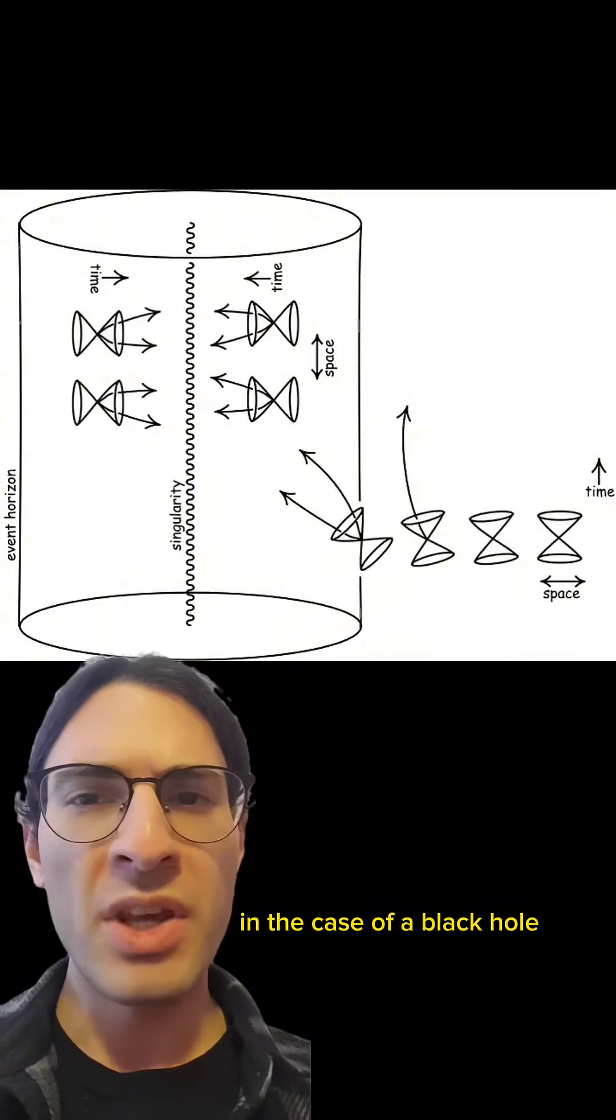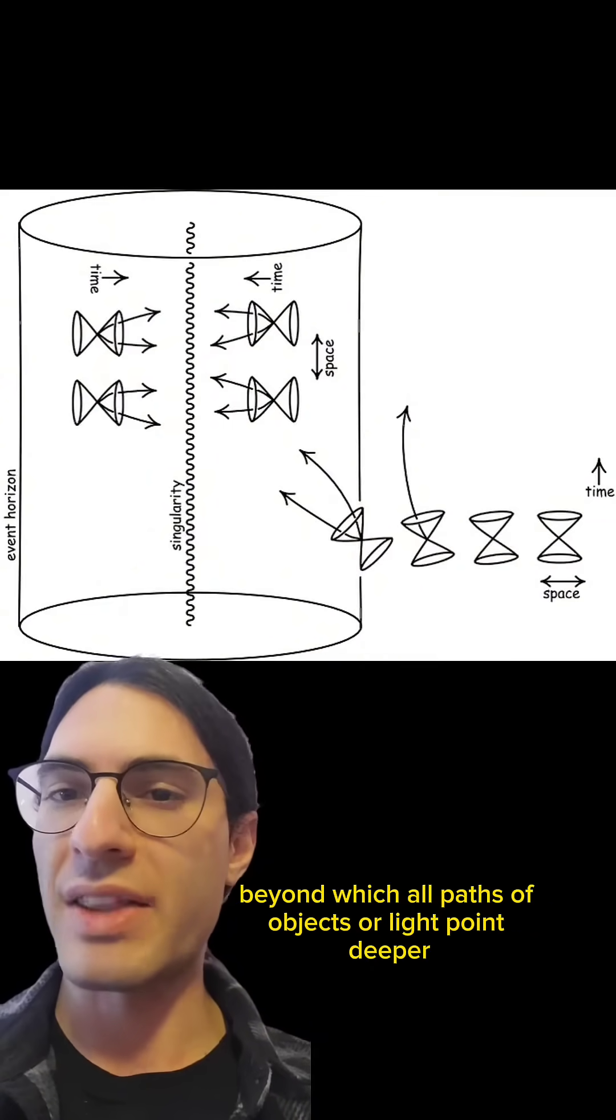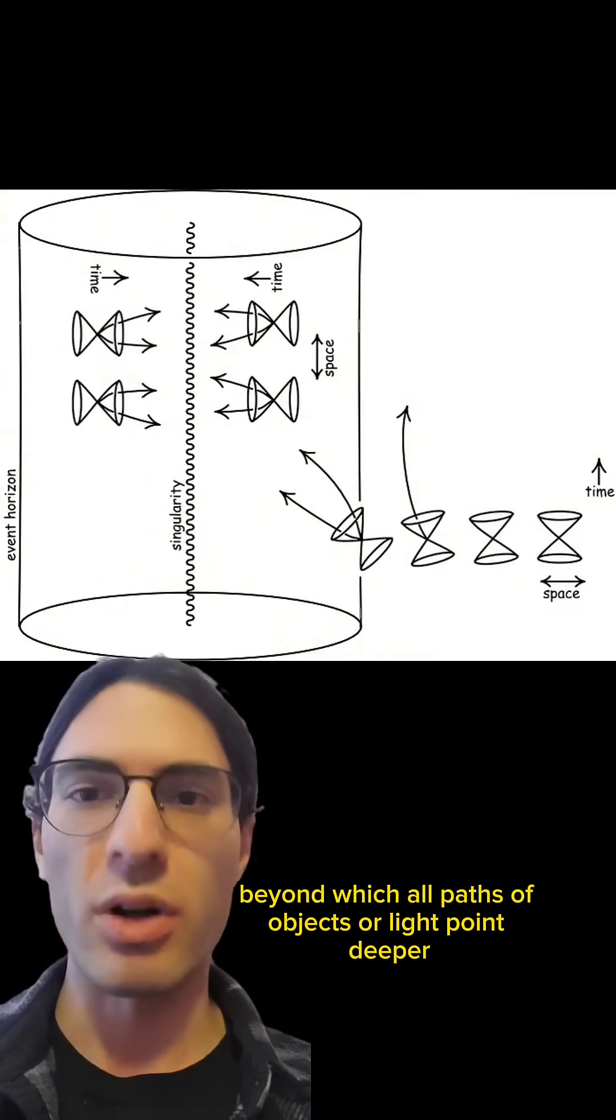In the case of a black hole, the event horizon is the invisible boundary beyond which all paths of objects, or light, point deeper into the black hole.